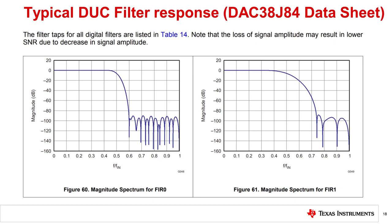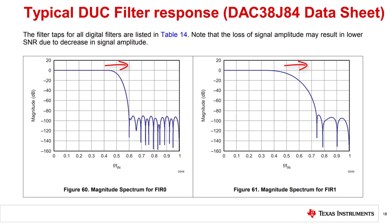Data sheets should show the filter response of the interpolation filters of the device. Figures 60 and 61 show the magnitude spectrum response for the FR0 and FR1 interpolating filters used by the DAC38J84 device. The x-axis uses a normalized scale for the input data rate to the FR filter. Other figures in data sheets include the composite filter response for the entire cascaded interpolation blocks used. Note that there will be a loss of signal amplitude as the frequency of interest approaches the knee of the filters, which will result in a lower SNR. Also, using multiple FR filters will add latency to the data path, and these latency numbers are usually listed in the datasheet.